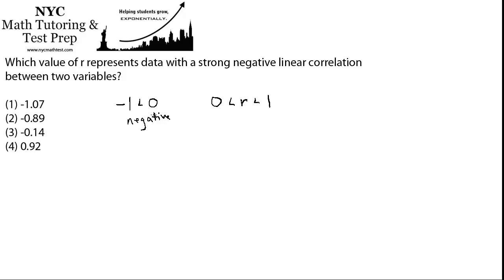Let me just write this a little differently here. I want to write negative one is less than R is less than zero. So that's what we'll call a negative correlation. If R is instead between zero and one, then we'll call that a positive correlation.